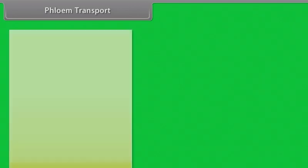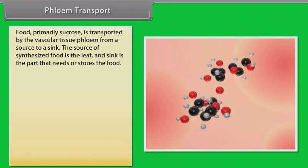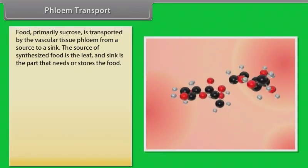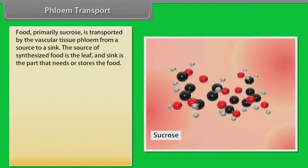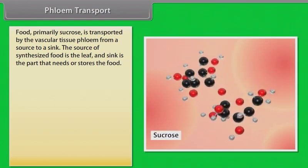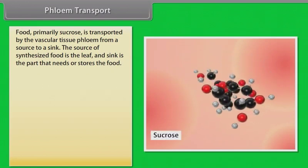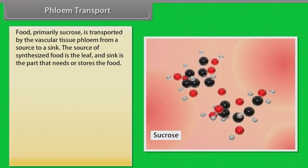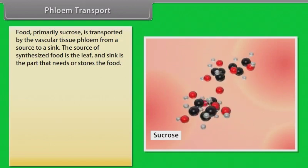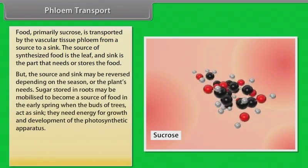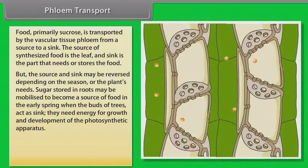Now we will learn about phloem transport. Food, primarily sucrose, is transported by the vascular tissue phloem from a source to a sink. Usually, the source is that part of the plant which synthesizes the food. The source and sink may be reversed depending on the season or the plant's needs.